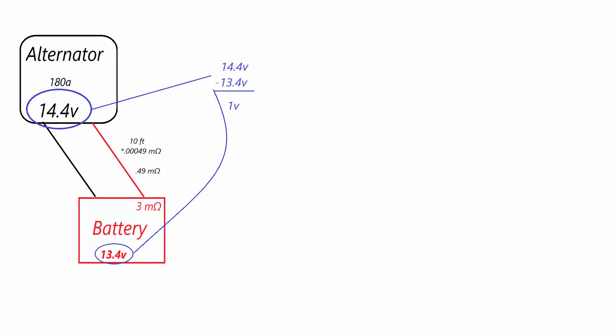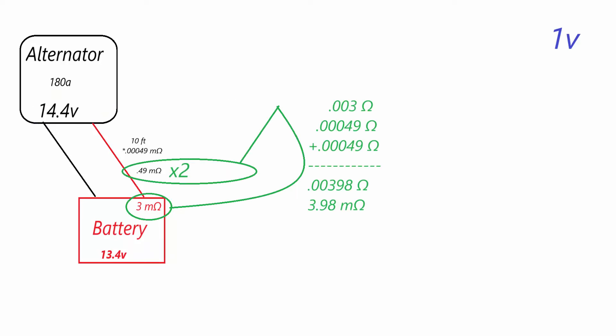To make this easy to follow along, we're going to assume 10 foot positive and 10 foot negative wires coming from the alternator directly to the battery. And in the first example, we're going to assume that we're using 4-0 wire. So this will be the same actually as dual 1-0. A quick Google search will let us know that 4-0 wire should have 0.049 milliohms per foot. So if we have 10 feet, that is 0.49 milliohms per 10 feet.